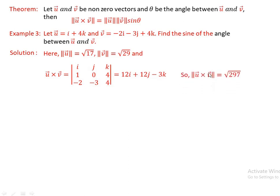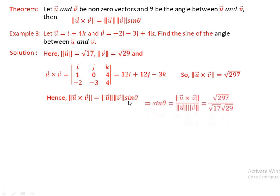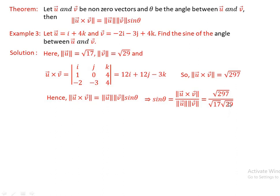The norm of u cross v equals square root of 297. Using the formula norm of u cross v = norm of u times norm of v times sine theta, we get sine theta = (norm of u cross v) over (norm of u times norm of v) = square root of 297 over (square root of 17 times square root of 29). Therefore theta = sin inverse of (square root of 297 over square root of 493).